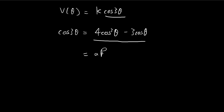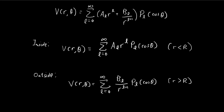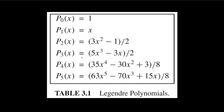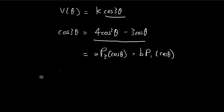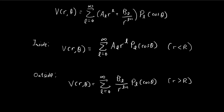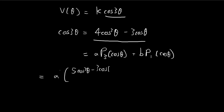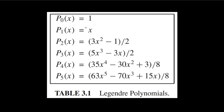I want to express this in terms of Legendre polynomials. Because there's a power of 3 here, I know this expression is going to be equal to some constant times P3 plus another constant times P1, expressing everything in terms of cosine. The third Legendre polynomial is equal to this expression, so you can substitute that in for 5 cos³θ, and then minus 3 cosθ divided by 2. And P1 is just cosine, as you can see — that's the first Legendre polynomial.